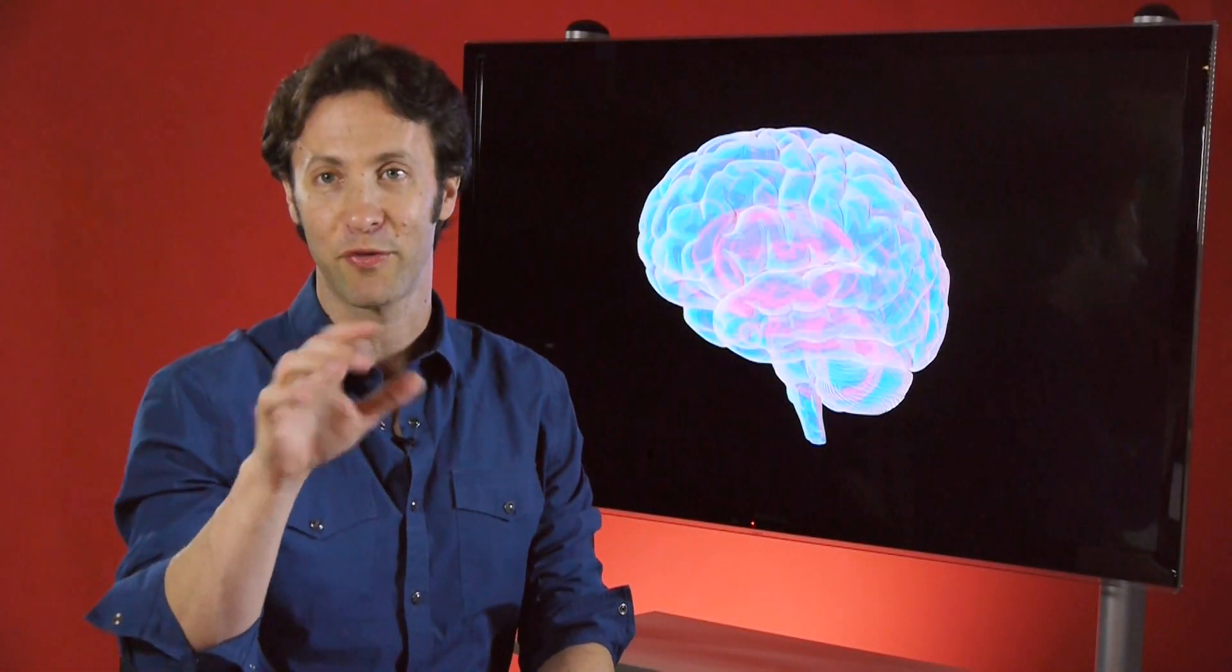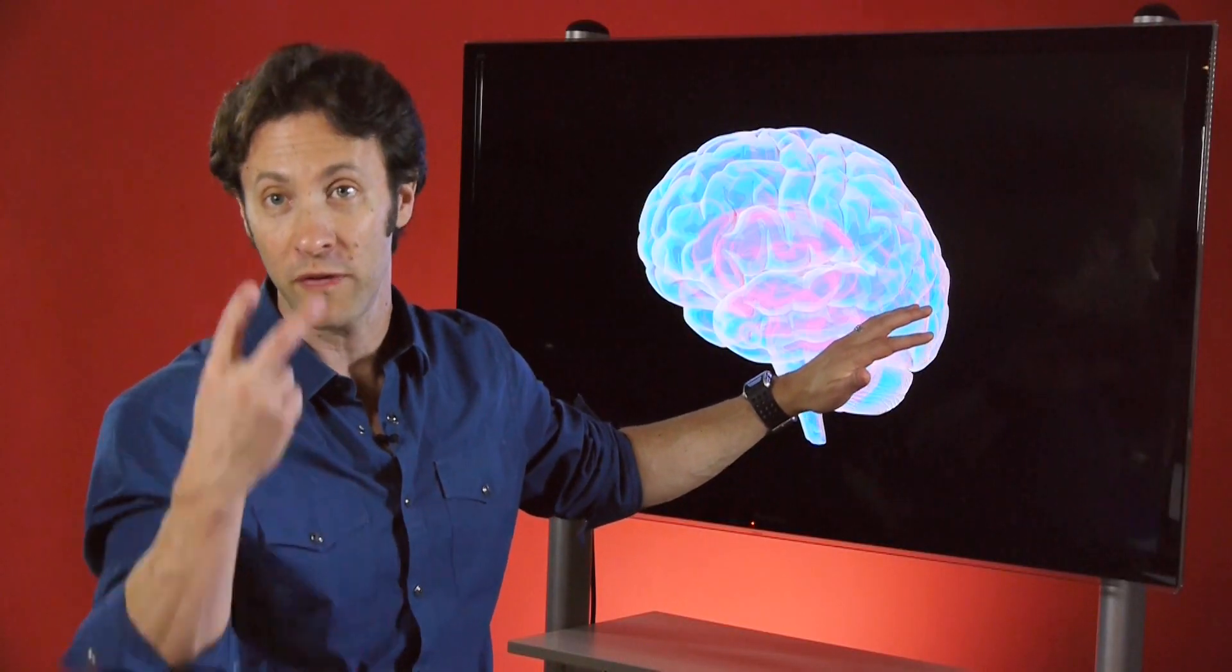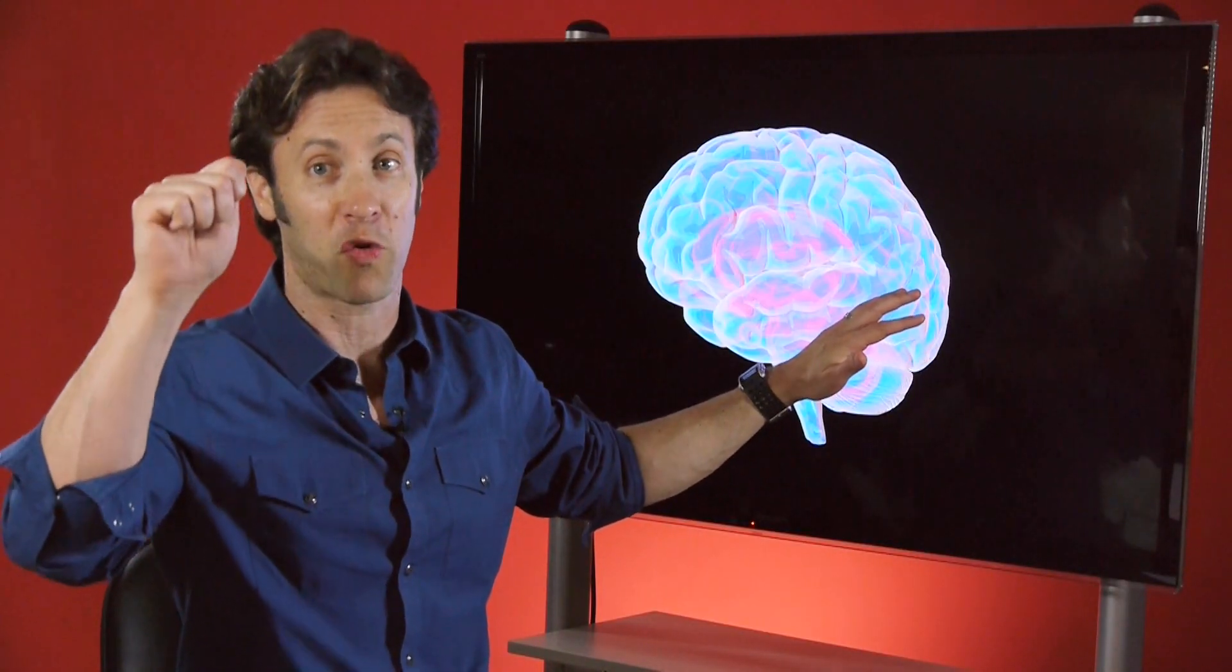So when we zoom in on the details of what's happening in the cortex, you find that different regions are specialized for very particular things. For example, the back part of the brain here is specialized for vision. So even though your eyes are in the front, that information crosses the entire territory of the brain and ends up being processed in the back of the brain.